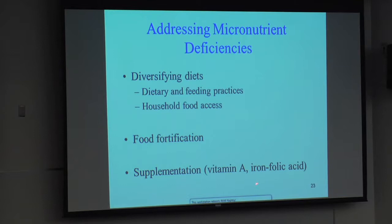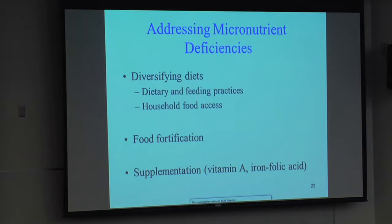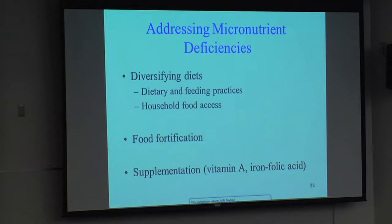A third approach is supplementation for specific micronutrients that particularly vulnerable groups need at certain times. Young children need vitamin A; if they don't get it, it increases their risk of dying and of blindness. So there are programs in many countries to provide vitamin A every six months to infants and young children. Similarly, pregnant women are at high risk of becoming anemic, with very negative consequences for themselves and their babies. So in many countries including the U.S., there's supplementation with iron and folic acid during pregnancy.